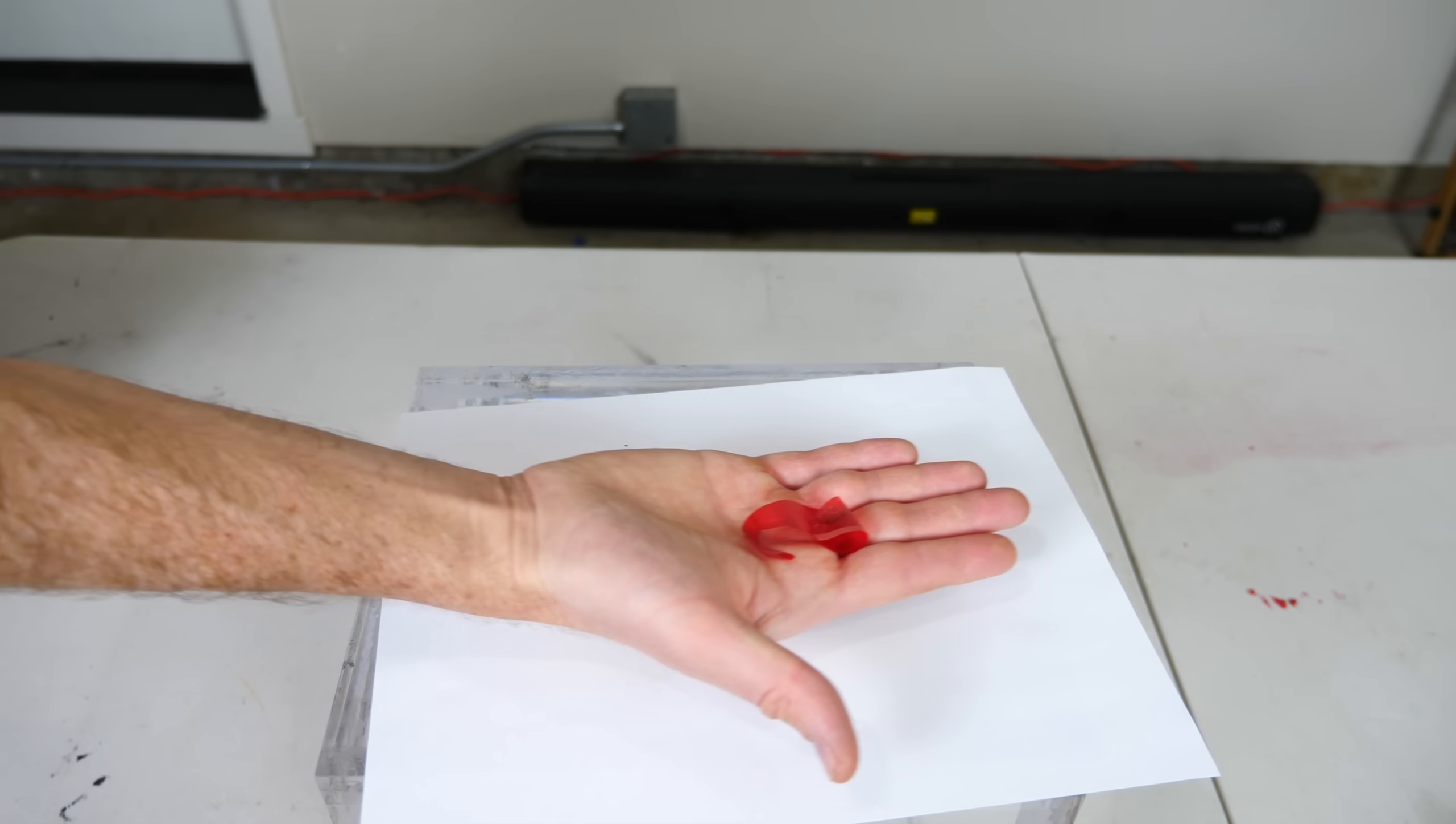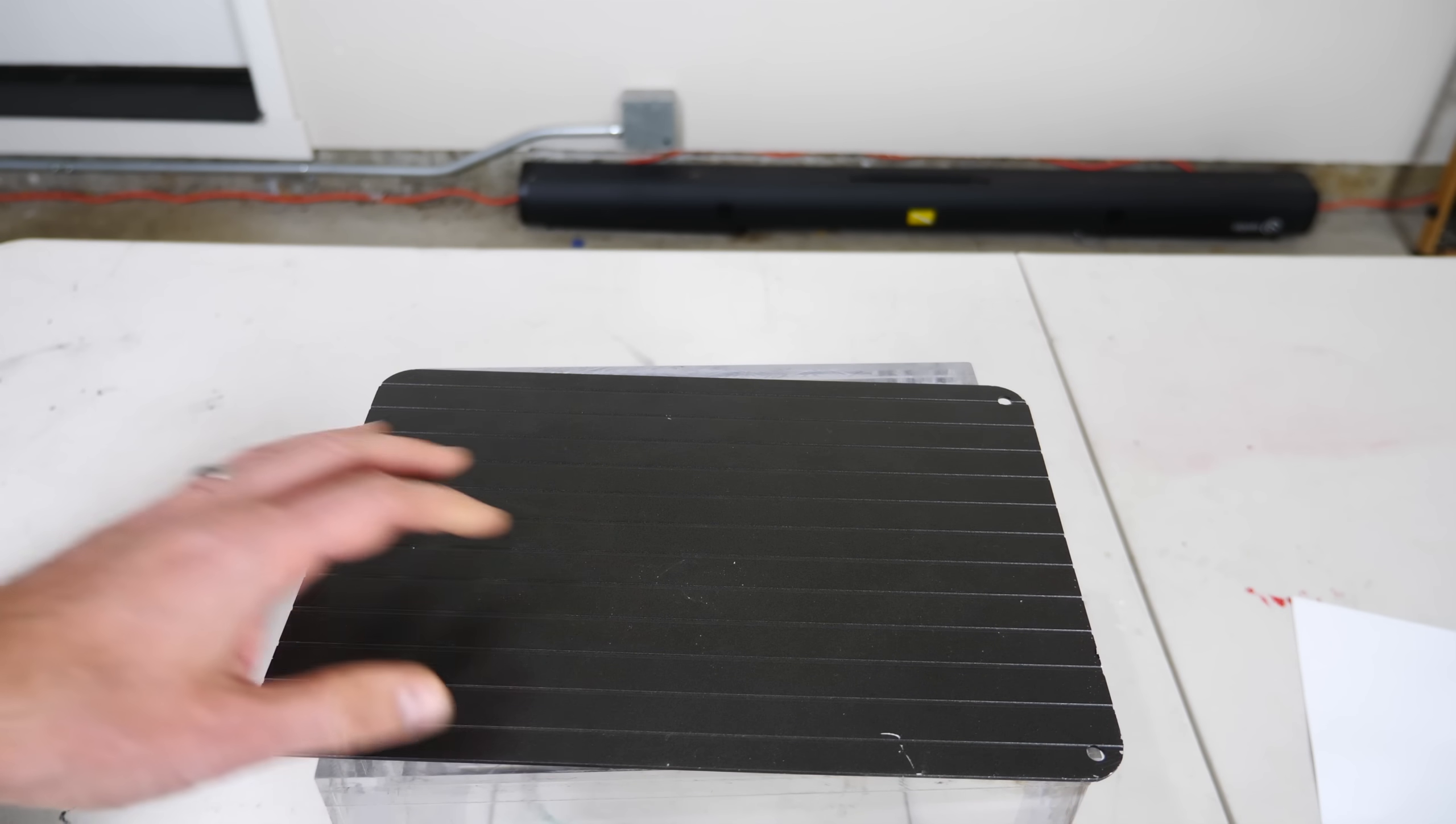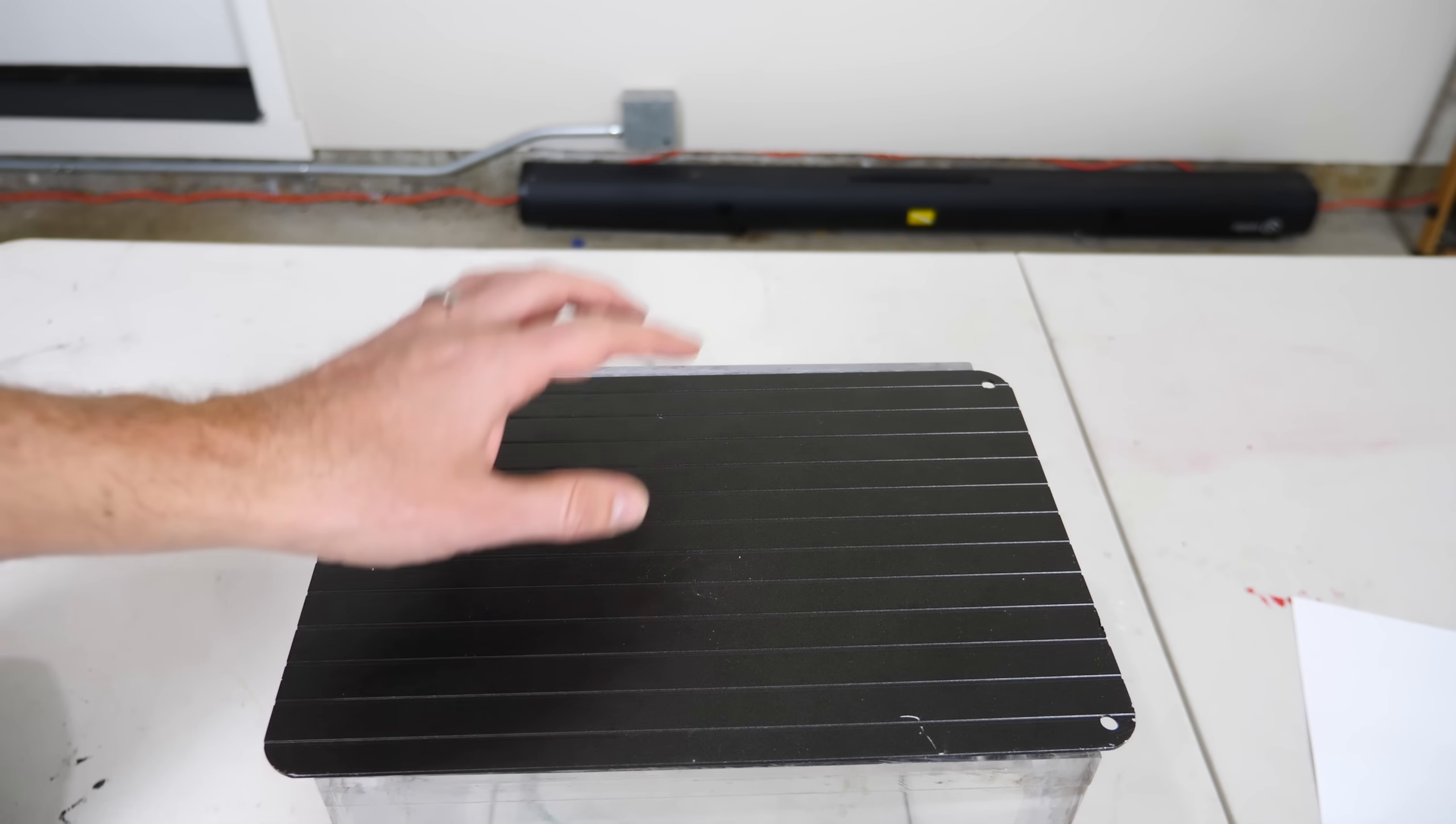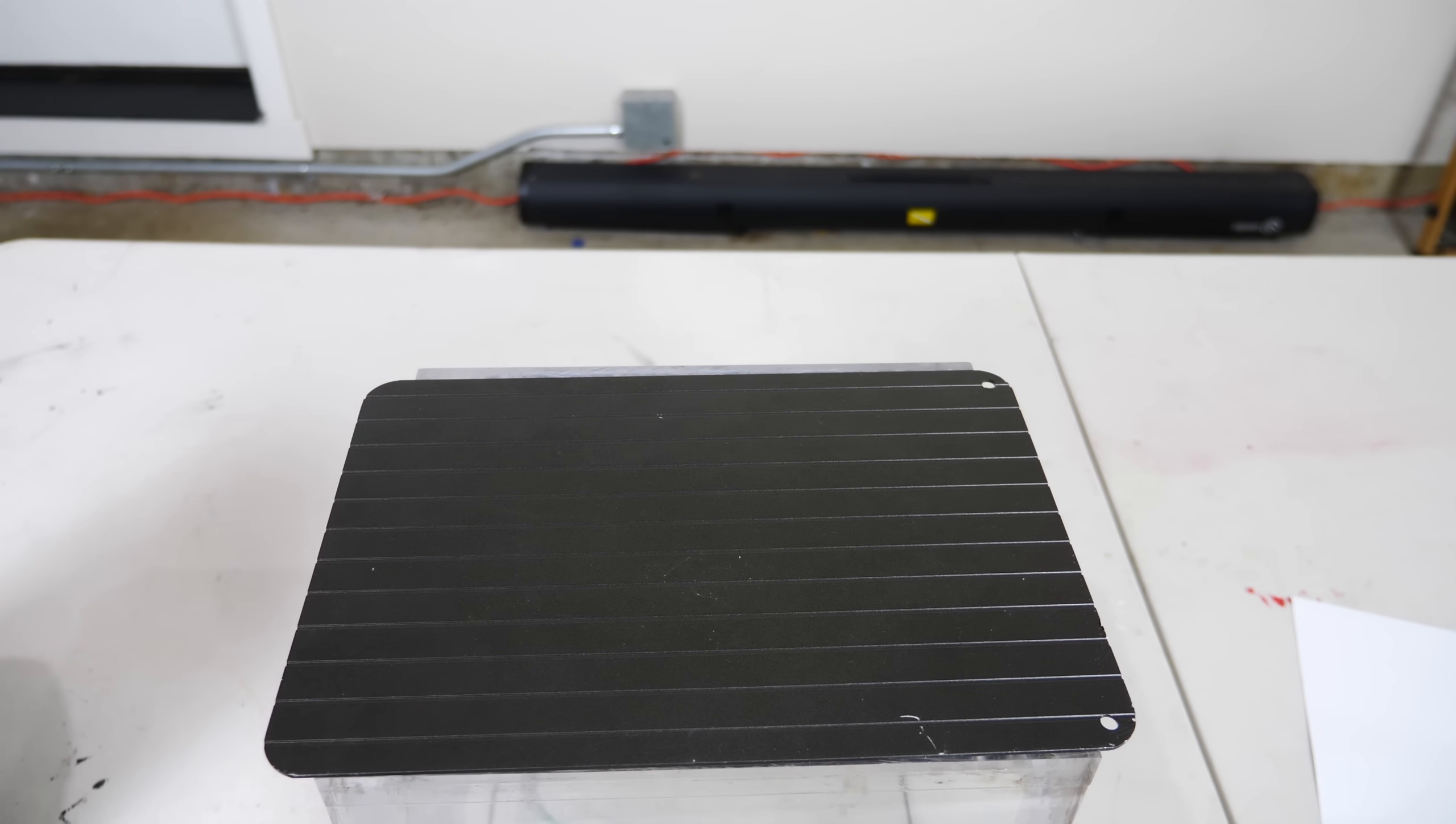Now the first guess would probably be the heat of my hand. So let's test out that theory. Okay, so to test this out I'm going to use this aluminum plate here and I'll heat it up to my body temperature and then set the fish on it and see if we see the same curling motion.